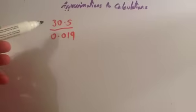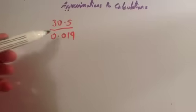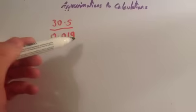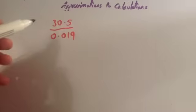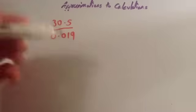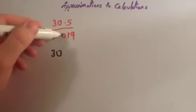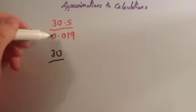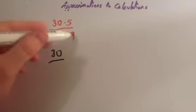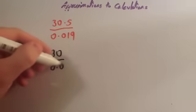Finally, we've been asked to approximate 30.5 divided by 0.019. So, to do this, you'd want to round them to one significant figure, as before. So, 30.5, well, that's going to round to 30. And 0.019, well, that's going to round to one significant figure to 0.02.